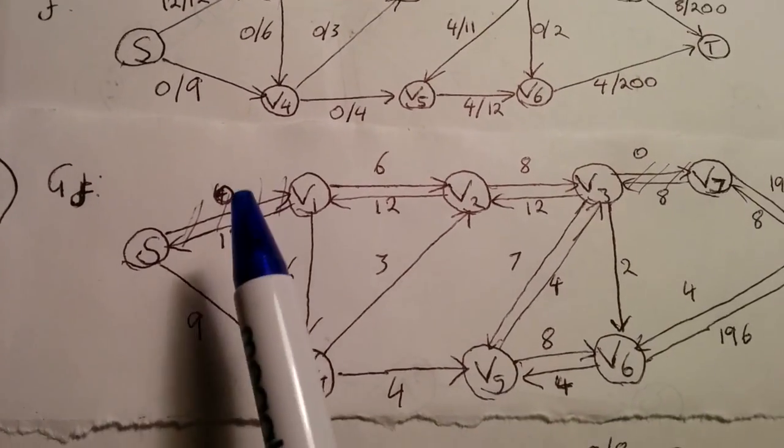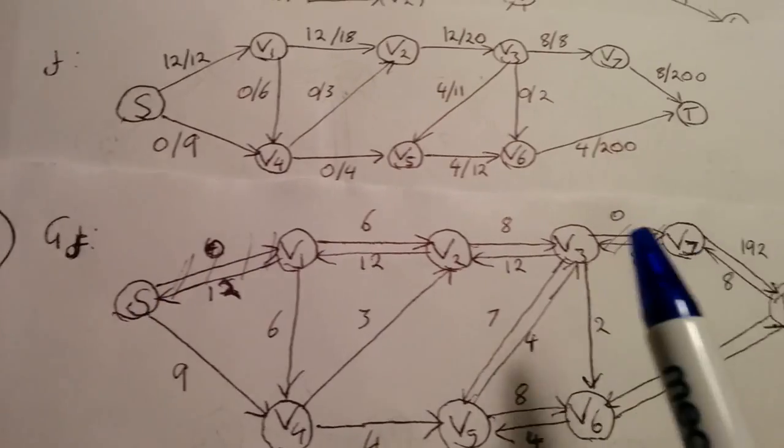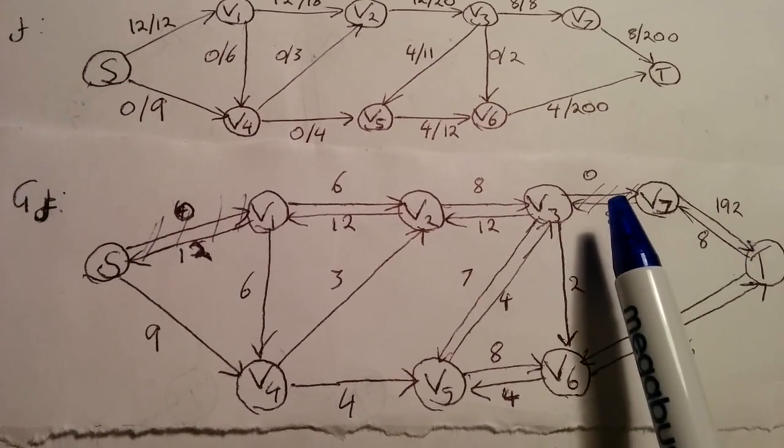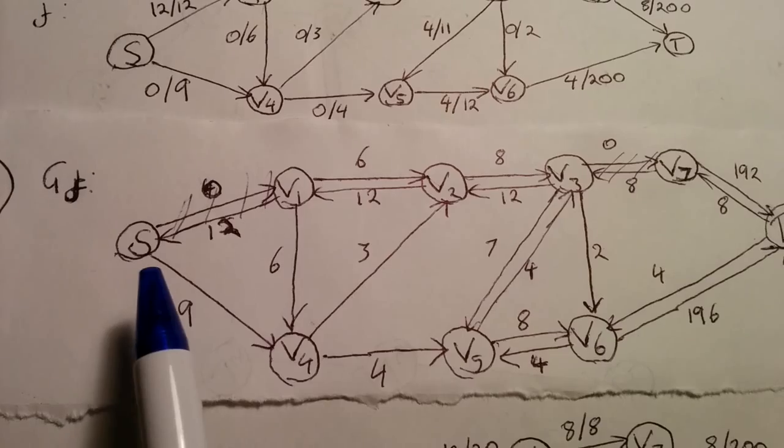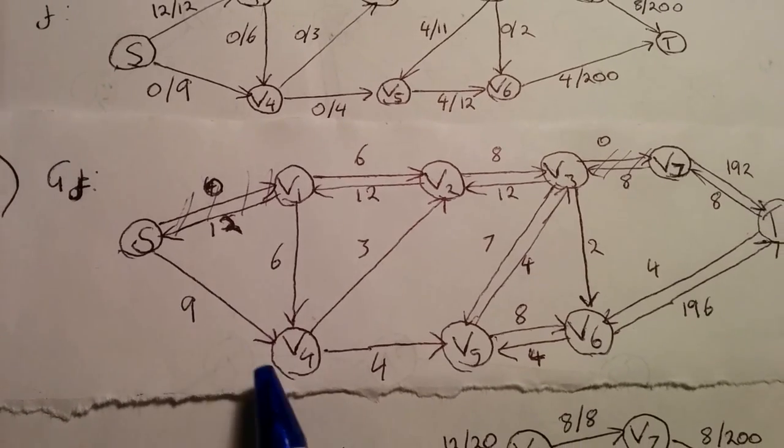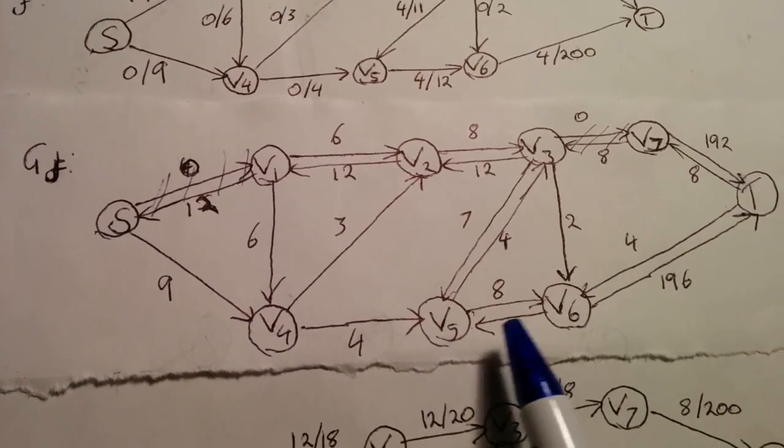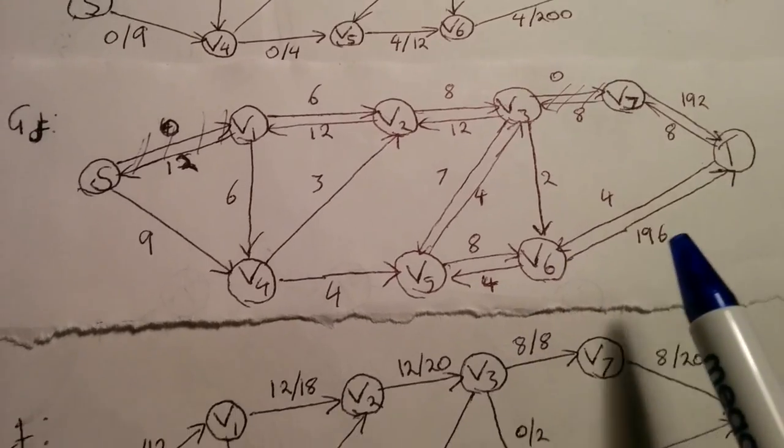So carrying on, we've updated these values, and I've just crossed out the edges that we can't access anymore, due to them having 0 capacity left. We now see that we can push a value of 4 from S to V4, V4 to V5, V5 to V6, V6 to T.